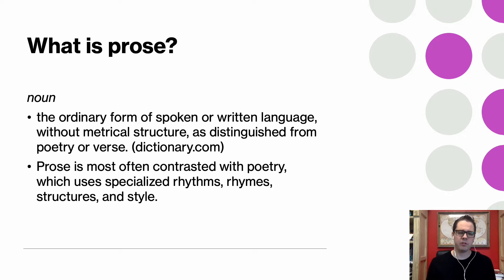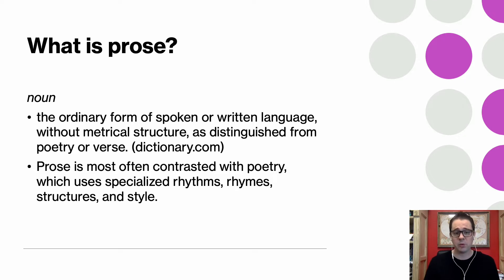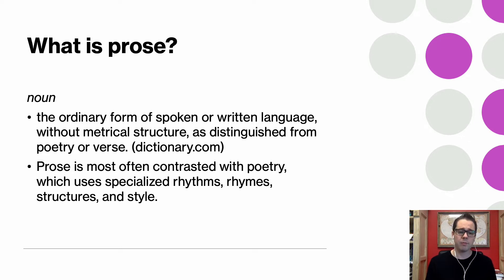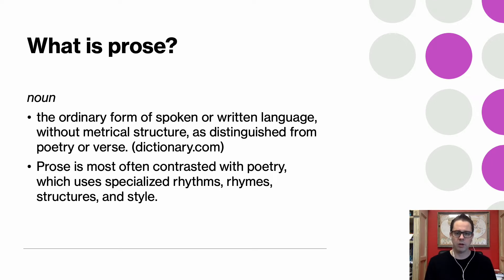What is prose? Prose is just the common way that we speak and write. You may hear that word in an adjectival form — something is prosaic — and sometimes people mean it's kind of boring or plain. But in this context, we just mean the normal form of writing. Prose is most often contrasted with poetry, which uses specialized rhythms, rhymes, structures, and styles — whether it's Shakespeare with a particular rhythm and meter, or something like a haiku with a very standard structure. Basically you have two forms of written communication: prose on one hand, and poetry on the other.